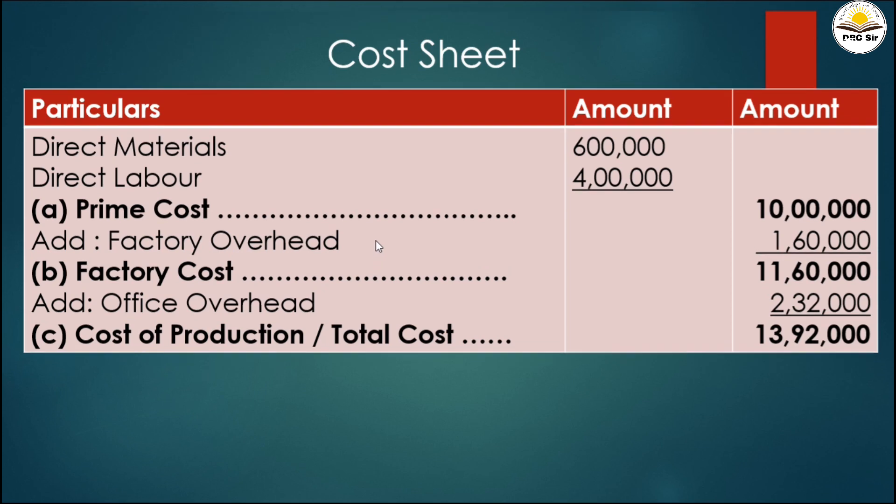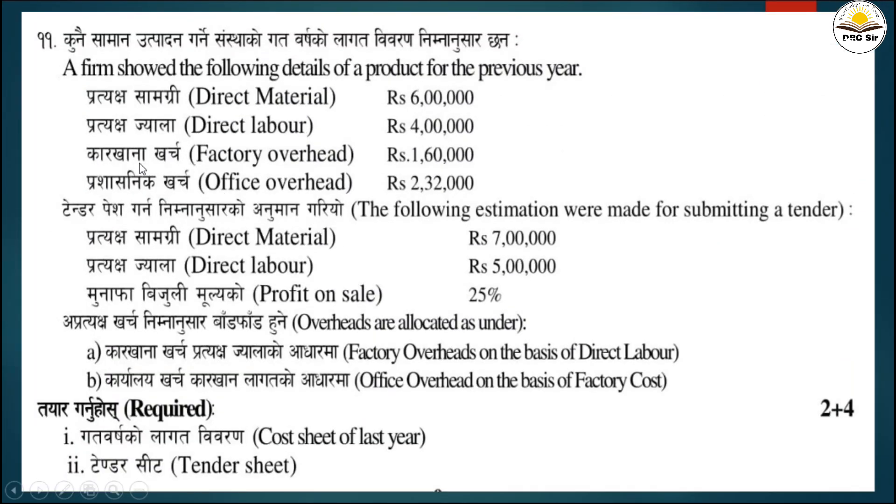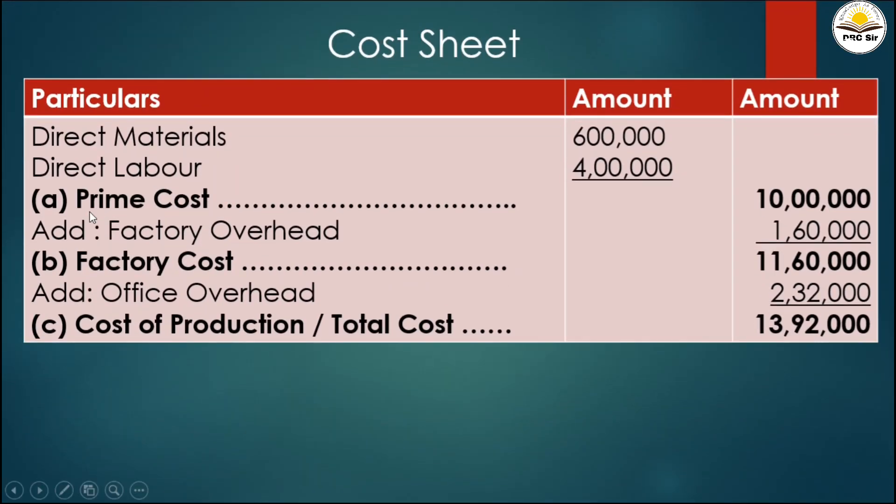Next we add factory overhead. The factory overhead given is 1 lakh 60 thousand. Prime cost plus factory overhead equals 11 lakh 60 thousand, which is the factory cost.